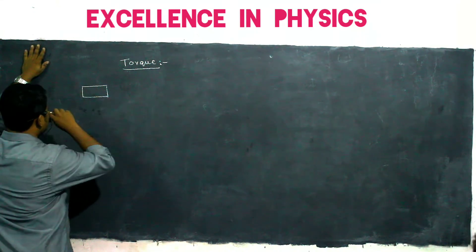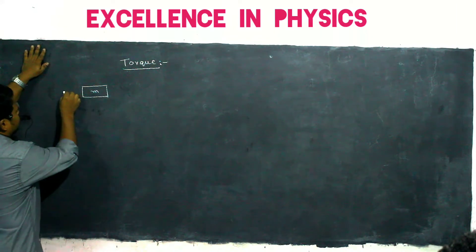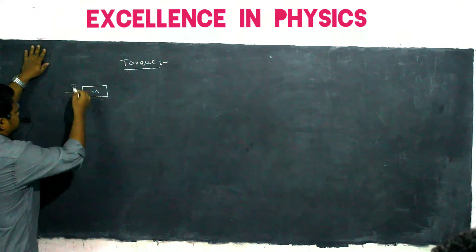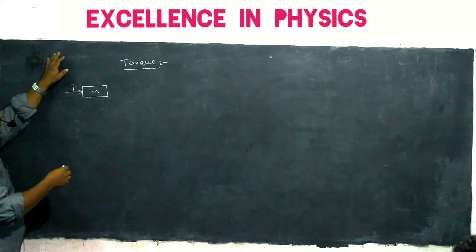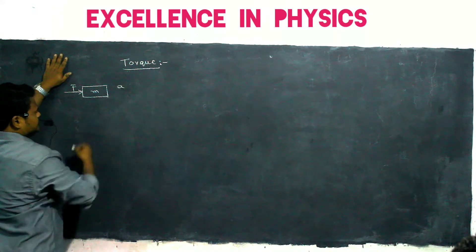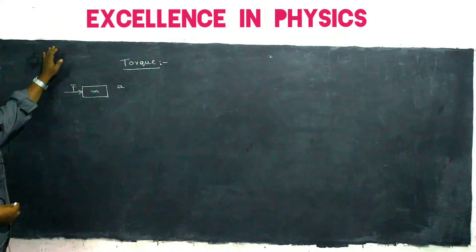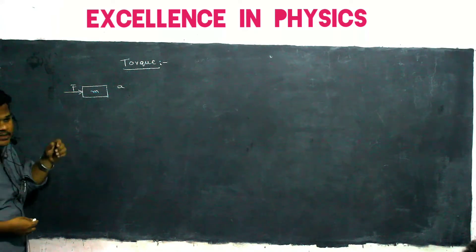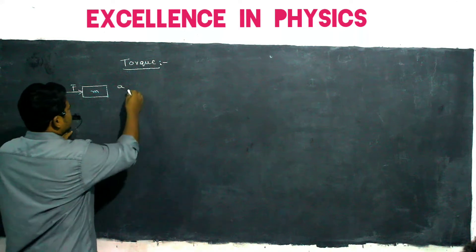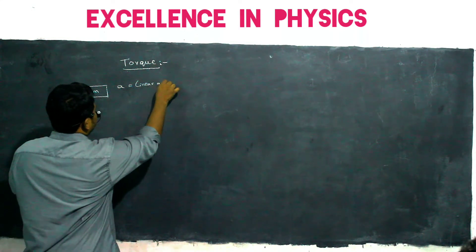For example, this is a body of mass M. I apply force in this direction. Then what will this force do? This force will produce acceleration. So F equals MA, therefore A equals F by M. This force produces linear acceleration. Here, A is called linear acceleration.